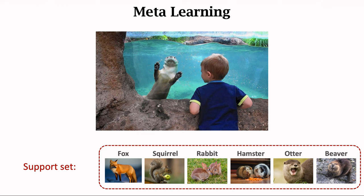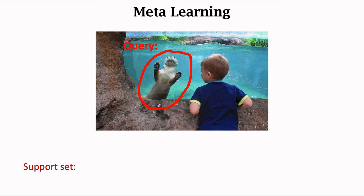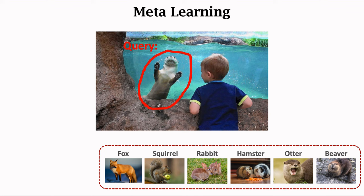The kid wants to know the animal in the water, which he has never seen before — in meta-learning, this unknown animal is called a query. You give him a set of cards and let him learn by himself; the set of cards is the support set. Learning to learn by himself is called meta-learning. In this example, letting the kid distinguish different animals is meta-learning. He knew how to relate the otter in the water with the otter on the card. There is only one card for every species, so he learns to recognize the otter using only one card. This is called one-shot learning.